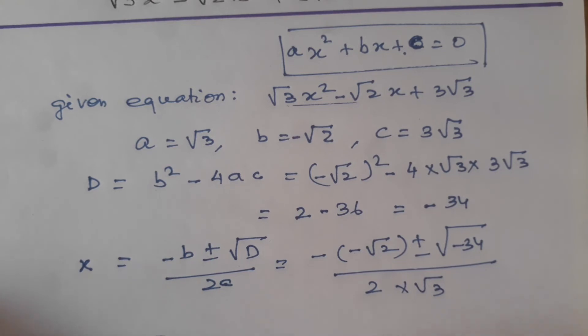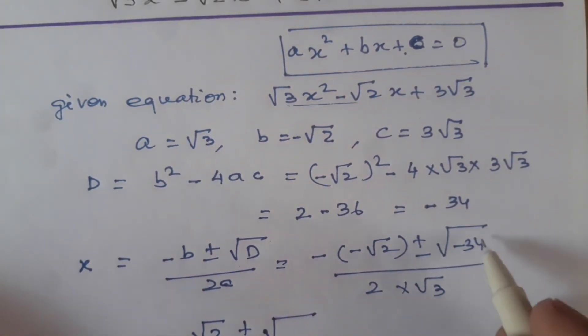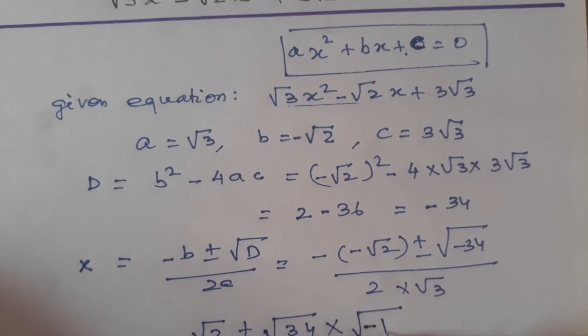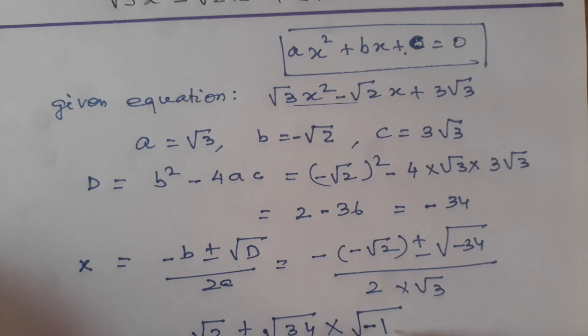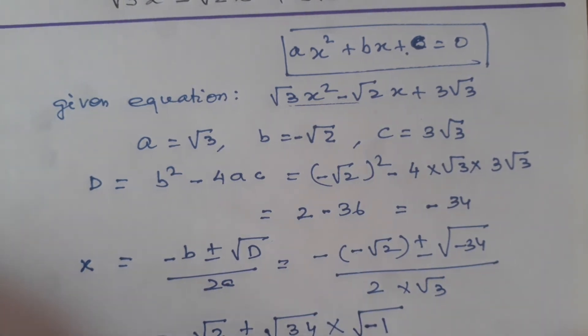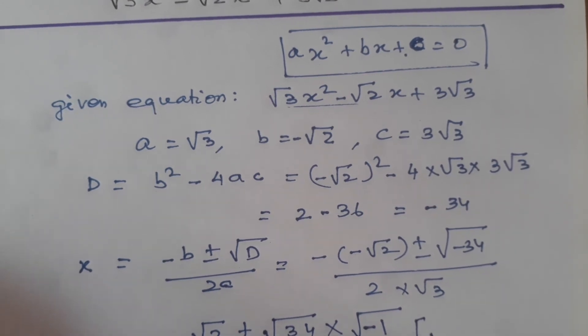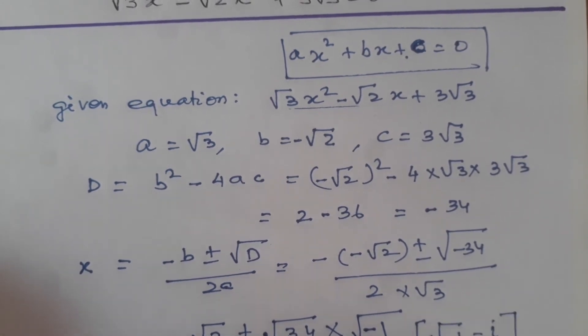So on further solution, minus minus plus, so it will be root 2 plus minus. And for this minus 34 under root, we can write plus 34 under root into minus 1 under root. So this will be ultimately root 34 and this will be 2 root 3. And we know that root under minus 1 equal to IOTA.